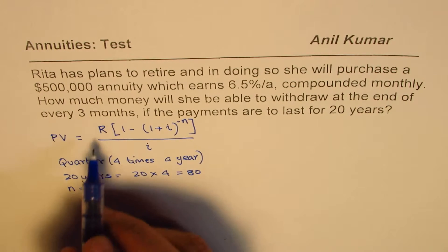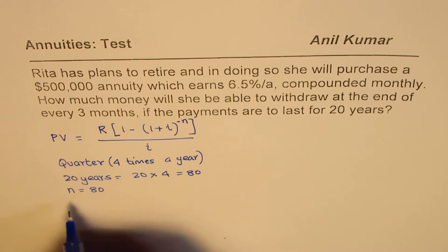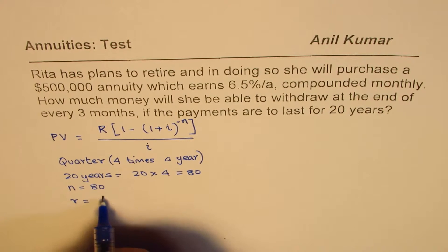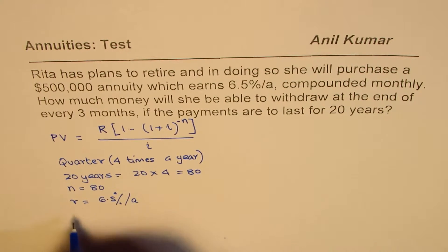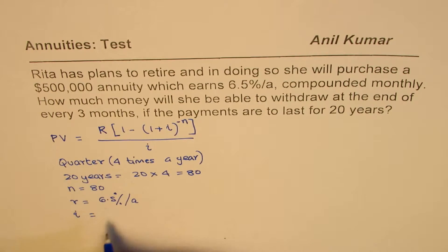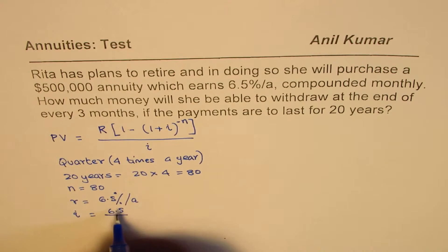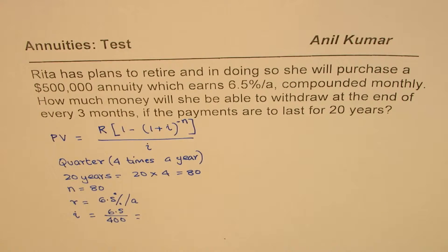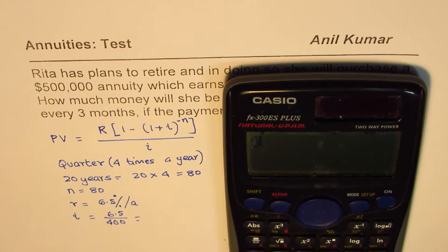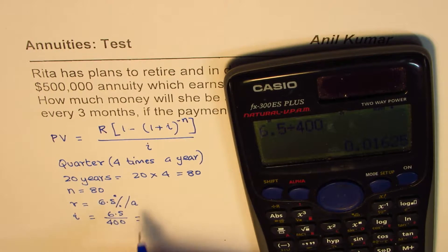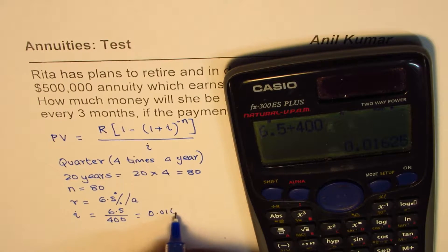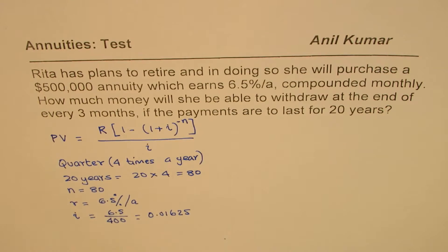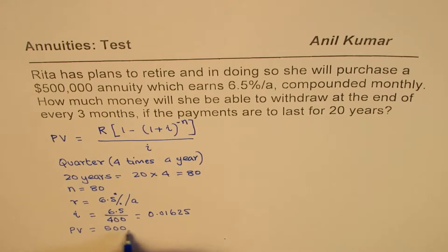We need to find r, which is how much she can withdraw. Now let's look at the interest rate i. The rate of interest is given as 6.5% per annum, so we have to find the effective rate for the quarter. That is 6.5 divided by 400, which gives us 0.01625. So that is our interest rate. And we know the present value is $500,000.